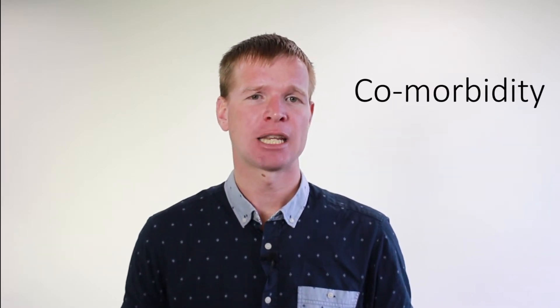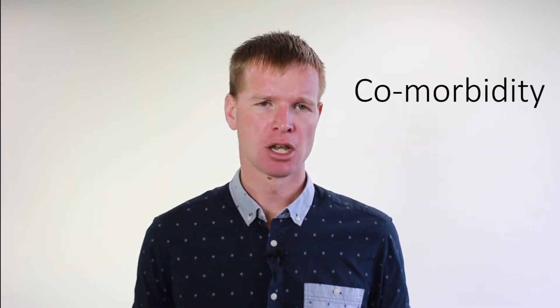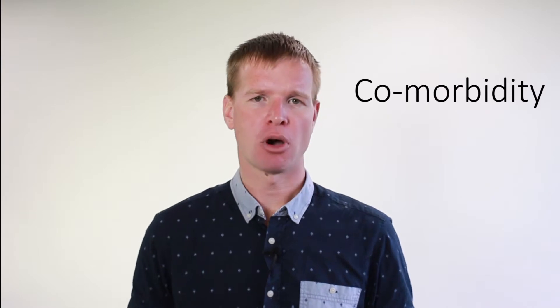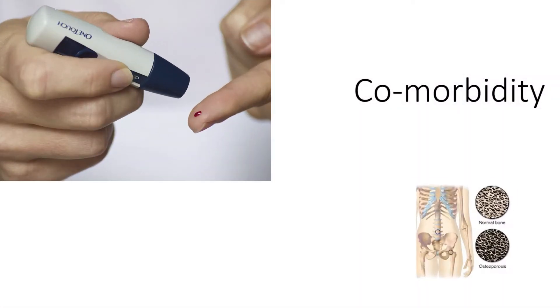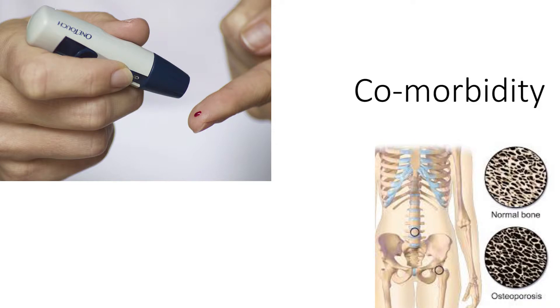In comparison, comorbidities indicate the presence of multiple chronic diseases, which for example are type 2 diabetes, osteoporosis, arthritis or cancers. These don't necessarily impact on daily functioning, but are still relevant to treat and manage.